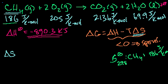So if I have one mole of methane, I have 186 joules per kelvin of entropy. If I have 2 moles, I multiply that by 2. If I have 3 moles, I multiply that by 3.